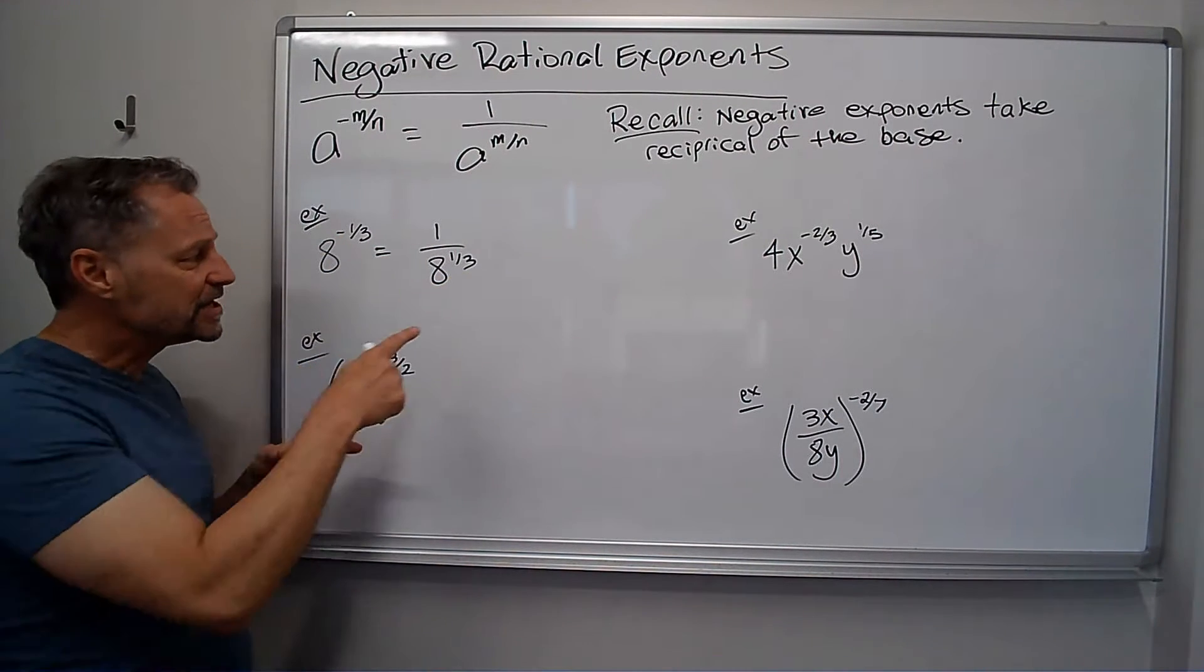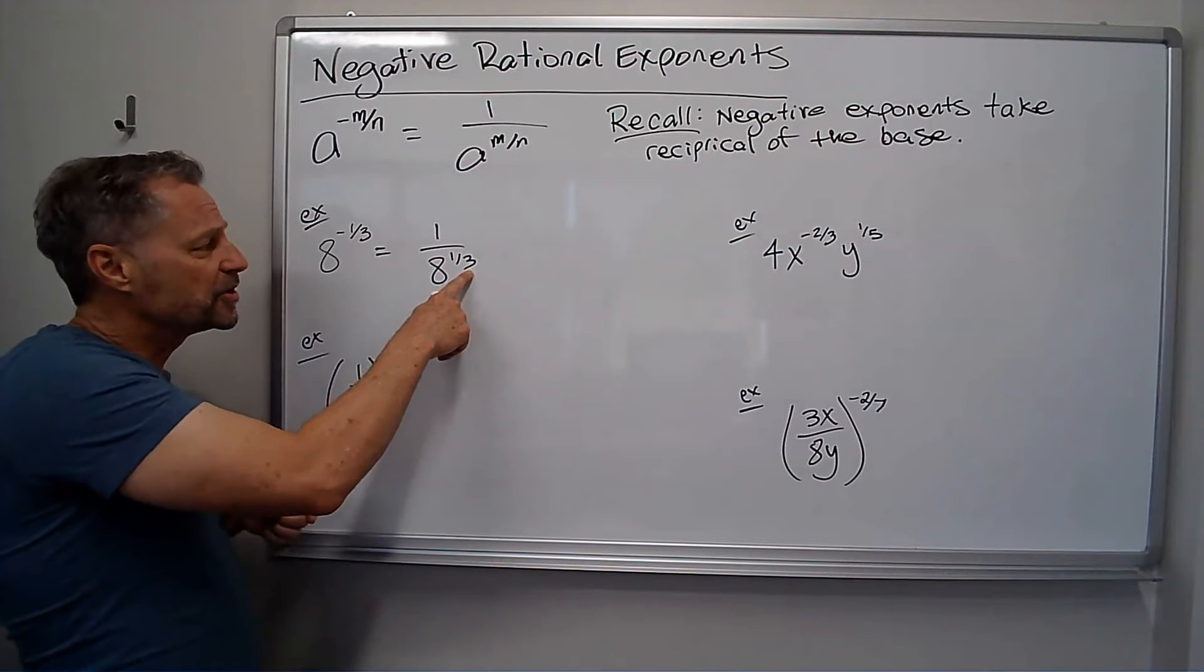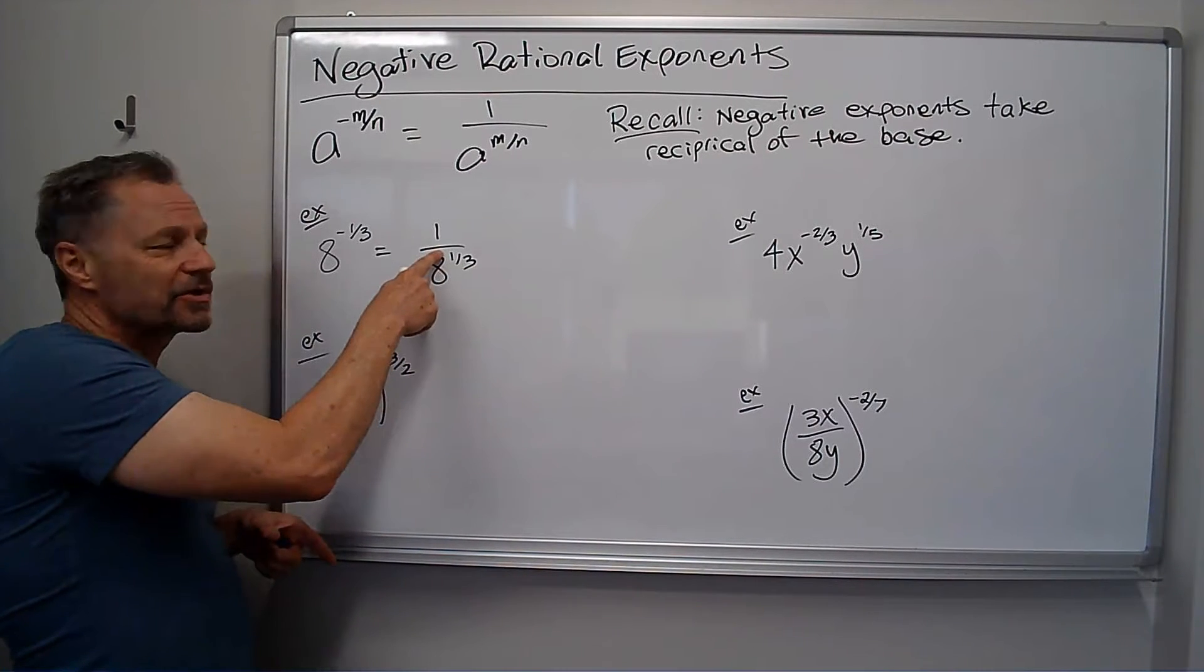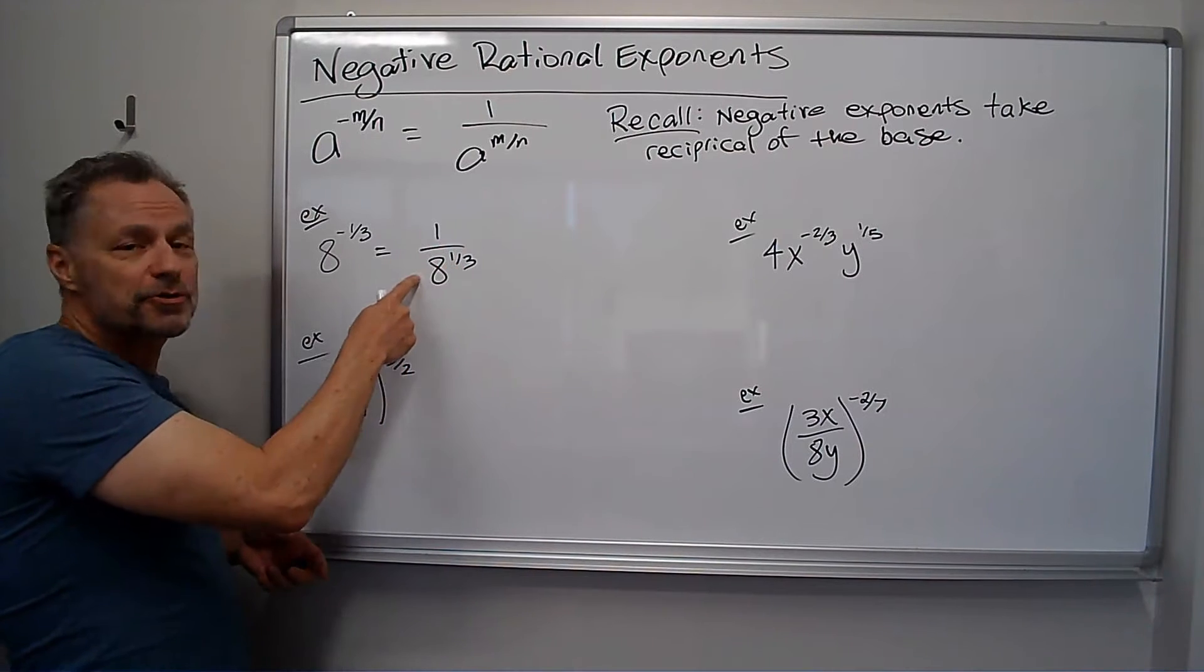And what I said in the other video, remember the number on the bottom of the fractional or rational exponent is the root and the number on the top's the power. So 8 to the 1st power is still just 8, but I have the 3rd root of 8.